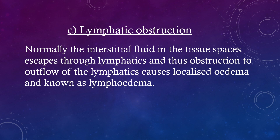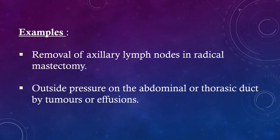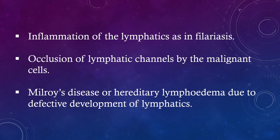Lymphatic obstruction. Normally the interstitial fluid in the tissue spaces escapes through lymphatics, and thus obstruction to outflow of the lymphatics causes localized edema known as lymphedema. Examples include: removal of axillary lymph nodes in radical mastectomy; outside pressure on the abdominal or thoracic duct by tumors or effusions; inflammation of the lymphatics as in filariasis; occlusion of lymphatic channels by malignant cells; and Milroy's disease or hereditary lymphedema due to defective development of lymphatics.